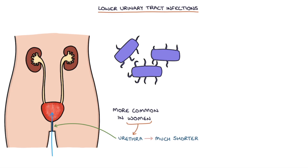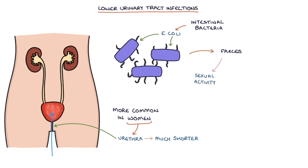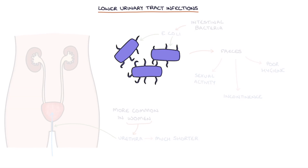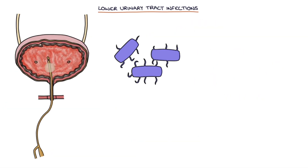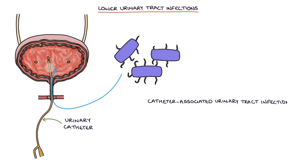The primary source of bacteria for urinary tract infections is from feces. Normal intestinal bacteria such as E. coli can easily make the short journey to the urethral opening from the anus. Sexual activity is a crucial method for spreading bacteria around the perineum. Incontinence and poor hygiene can also contribute to the development of UTIs. Urinary catheters are also a key source of infection, and catheter-associated urinary tract infections tend to be more significant and challenging to treat.